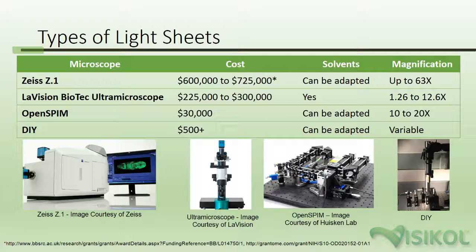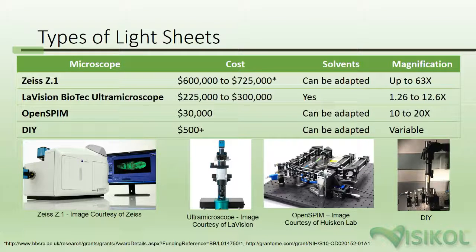Currently, there are only a handful of commercially available light sheet microscope devices, including the Zeiss Z1 and the LaVision Ultra Microscope 2. While these devices might be available at a location nearby, there are some considerations to be taken into account before you start using one or buy your own. The first is whether or not the instrument is compatible with solvents. Many light sheet setups, such as the Z1, use water-dipping objectives, whereas immersion in the solvent can damage the objectives. The Ultra Microscope has a lens cover that allows it to be used directly with solvents, whereas the OpenSPIM device and Z1 require that the sample is placed in a special cuvette in the imaging container. This is important as some of the best clearing techniques are solvent-based. The second consideration is how often you will be using the light sheet and what features you need.